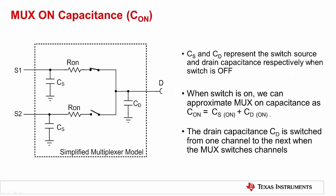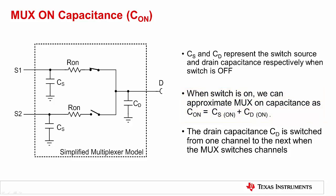This slide explains how MUX ON capacitance determines the settling and transient performance of the system. The figure illustrates a simplified model for a MUX. Each channel of the MUX can be modeled as a series combination of capacitors and resistors. CS and CD represent the switch source and drain capacitance respectively when the switch is off. R_ON is again the on resistance of the MUX. Typically, MUX drain capacitance is higher than source capacitance. When the switch is ON, we can approximate that the MUX ON capacitance C_ON is equal to CS_ON plus CD_ON. Most MUX datasheets provide typical and maximum values for this capacitance, as well as capacitance versus source voltage. The drain capacitance CD is switched from one channel to the next when the MUX changes channels, and this capacitance needs to be recharged to the input voltage for the new channel. This transition determines the multiplexer's settling, which will be covered in detail in the next slide.